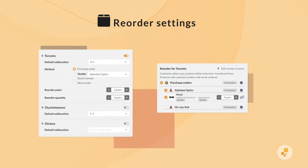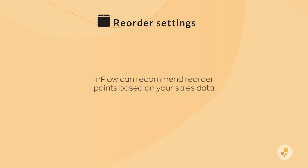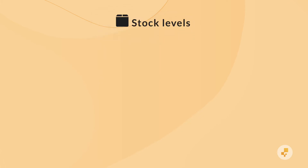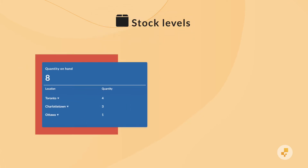Reorder settings specify when Inflow should notify you about low stock and how you might want to reorder that stock at each location. If you don't have reorder points yet, Inflow can recommend reorder points for your products once you have some sales data in the app. If you have multiple locations, you'll need to use a stock levels import to specify the quantity on hand for each product at each location in Inflow.